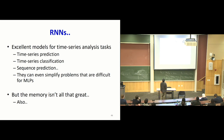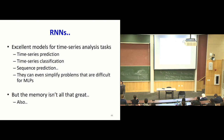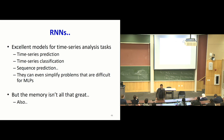RNNs are excellent models for time series analysis — prediction, classification, sequence prediction. They can even simplify problems that look designed for MLPs, recasting them with RNNs for better solutions. But the problem is that the memory isn't all that great — they tend not to remember things you want them to remember, and the manner in which they forget is a function of the network itself rather than what you're trying to remember.